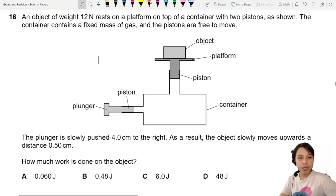An object of weight 12 newtons rests on a platform on top of a container with two pistons. The container contains a fixed mass of gas and the pistons are free to push in and out. The plunger is slowly pushed 4 cm to the right.